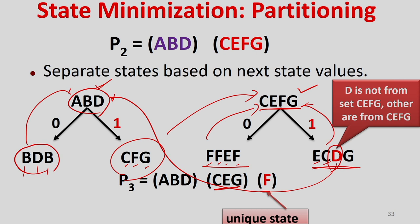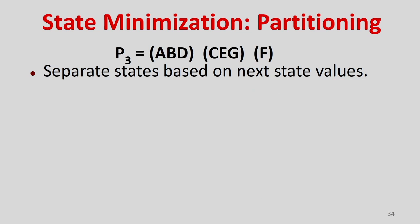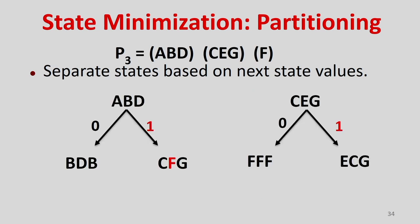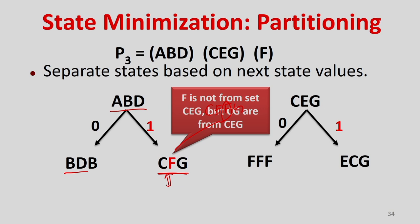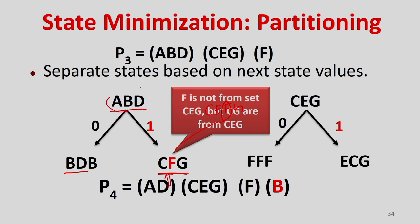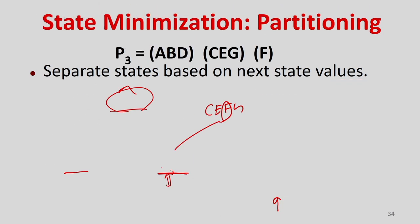From partition 3: F is now a unique state, different from C, E, G. In {A, B, D}, because F is different and appears in the next state of B, B is now different from A and D. So B becomes a unique state. We now have partitions: {A, D}, {C, E, G}, {F}, and {B}.